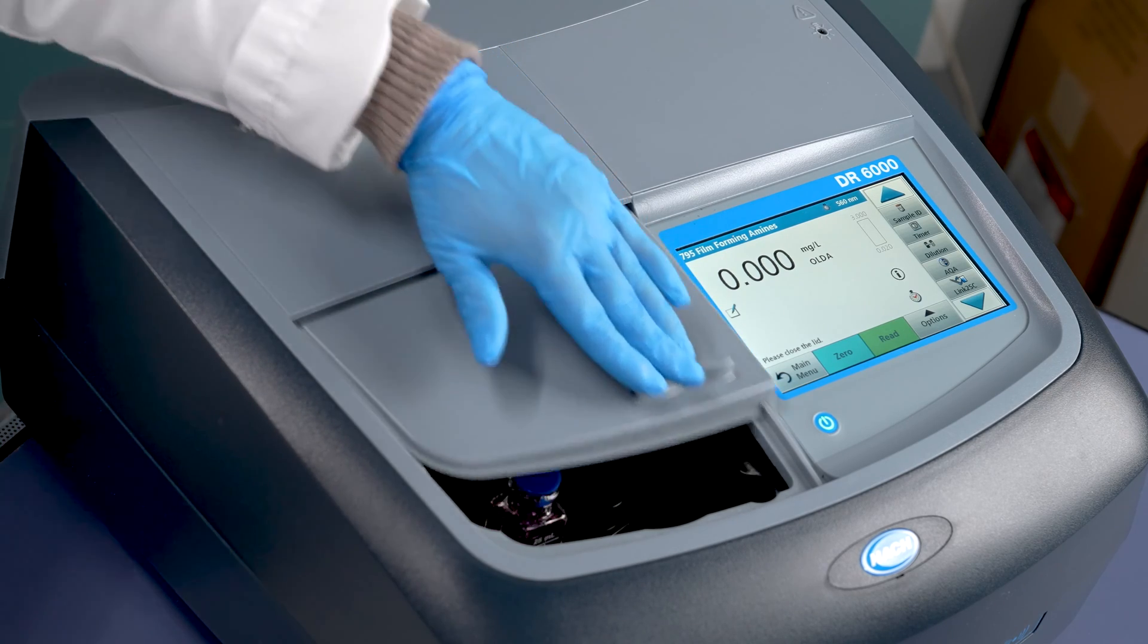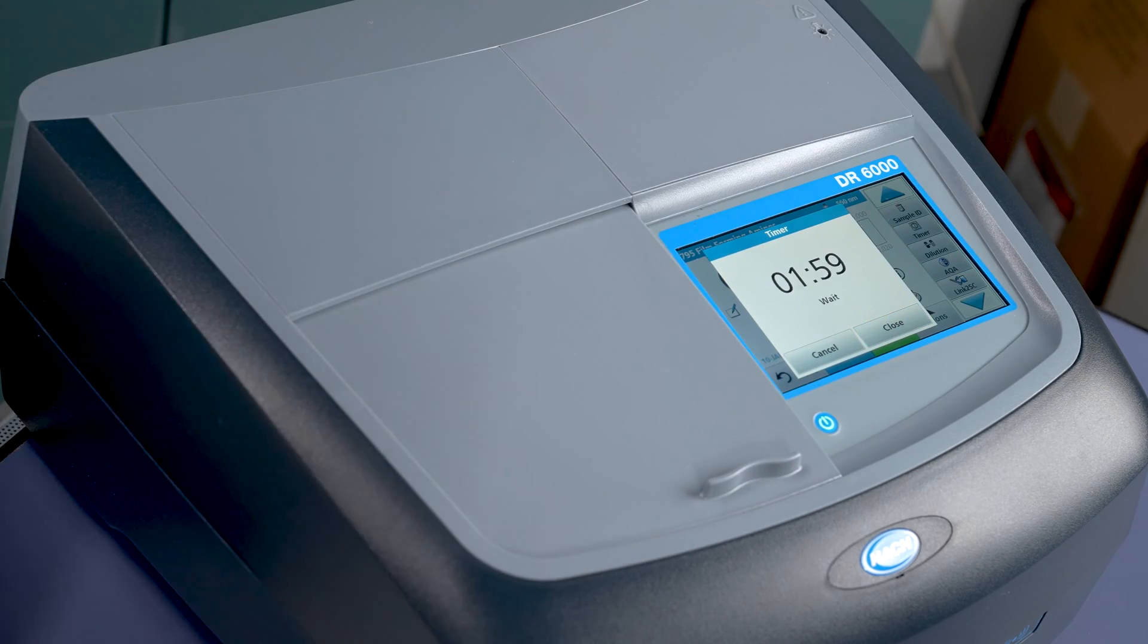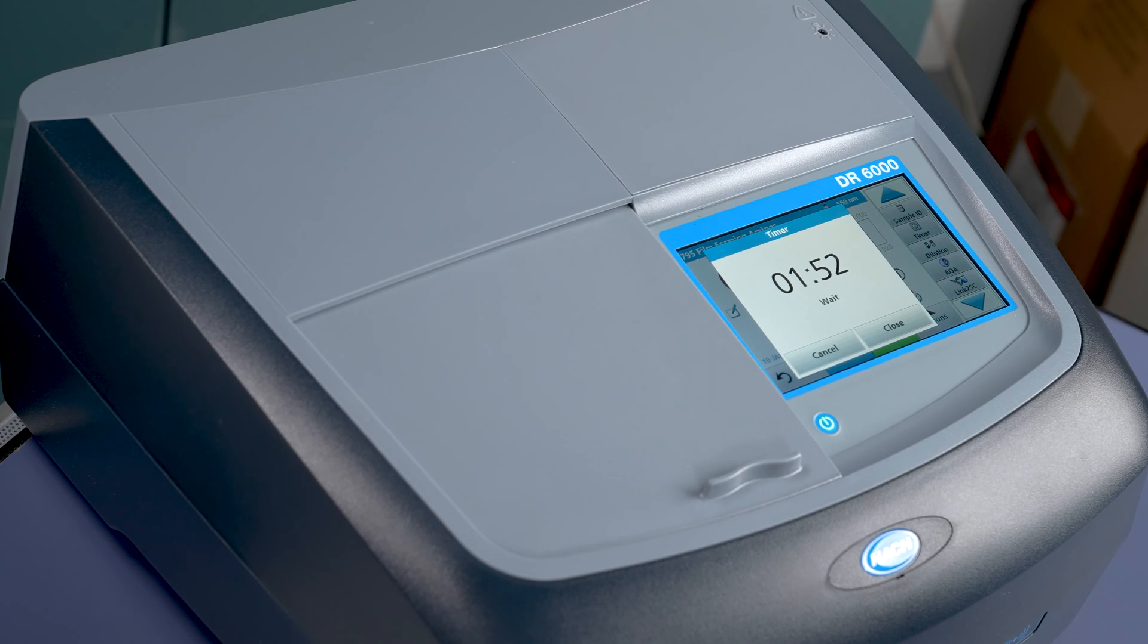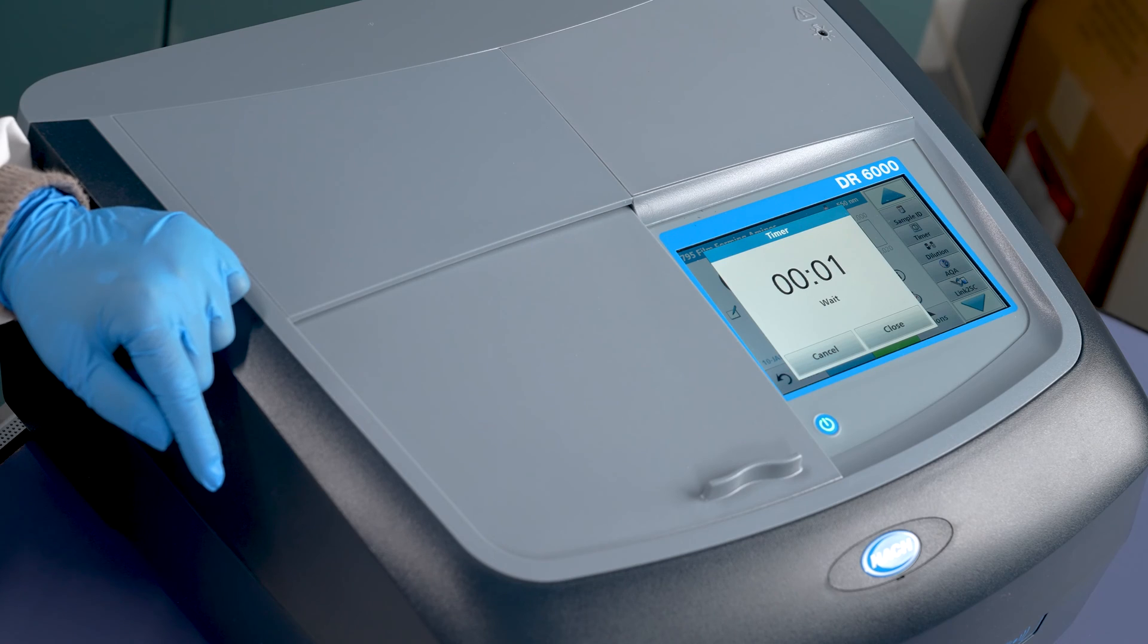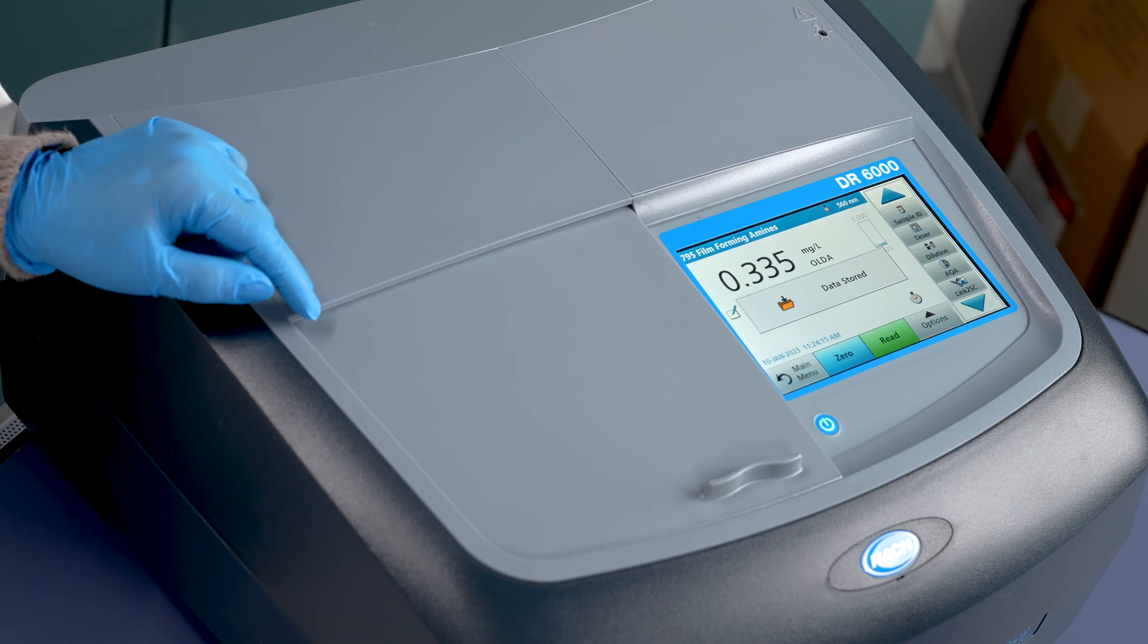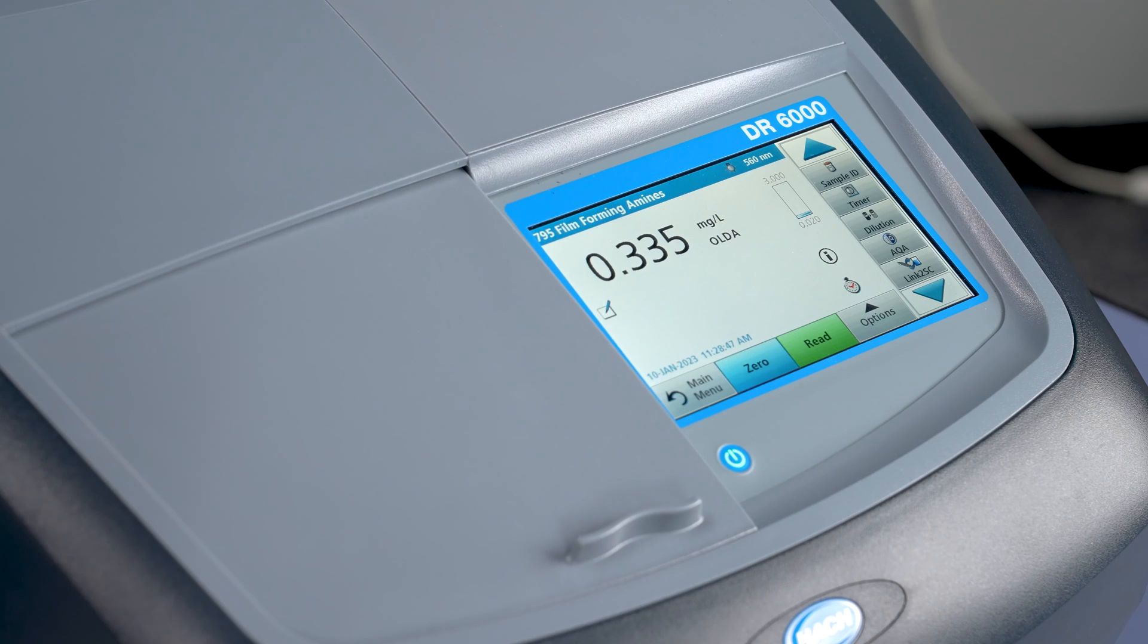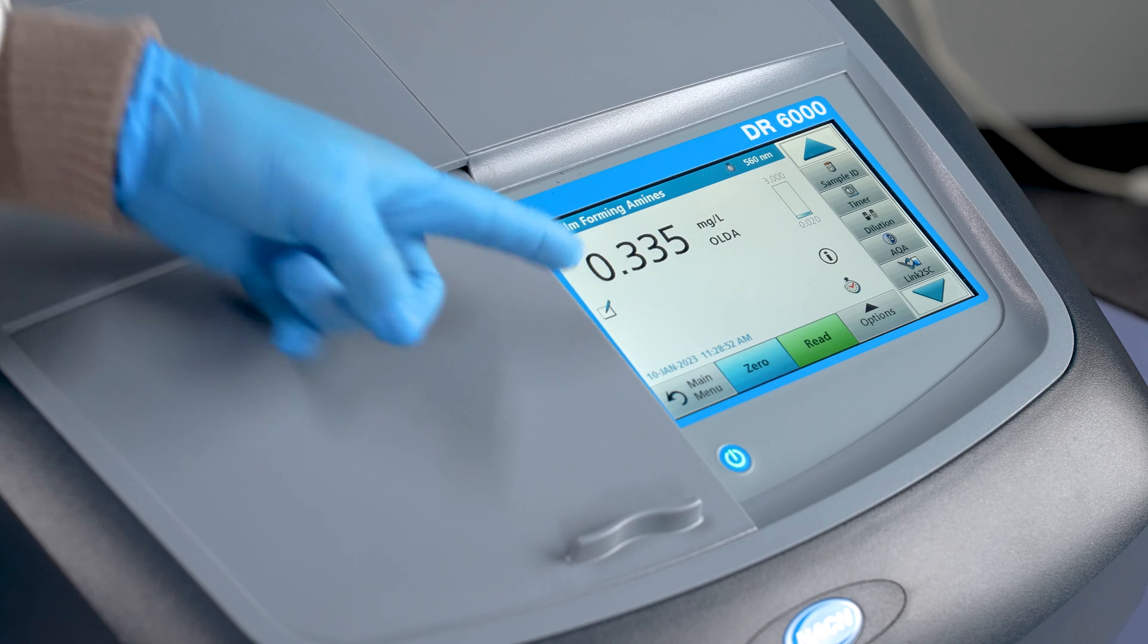As Tenista puts the sample cell into the spectrophotometer, it is very important to reiterate that the 25 mm mark is to face you toward the front on a DR6000. On a DR3900, it will face to the left. After pressing read, you will see the result of your method. As you can see, the reading is 0.335 mg per liter OLDA.